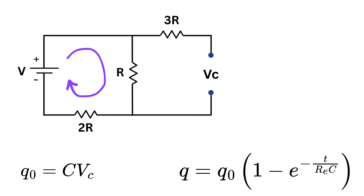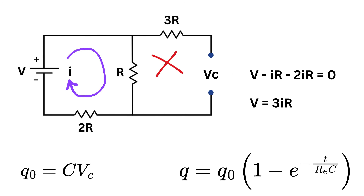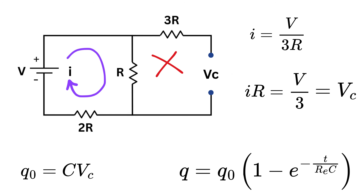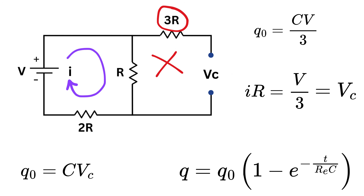Looking at the loop: if we pass current I from the battery, all current travels in the main loop and no current passes through the branch with the capacitor, since it's an open circuit. The loop equation gives V minus IR minus I times 2R equals zero, so V equals 3IR, meaning I equals V over 3R. Therefore the voltage across that resistor is I times R, or V by 3. This is also the voltage across the capacitor at steady state, so Q0 equals C multiplied by V divided by 3.